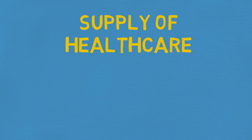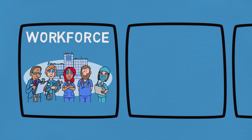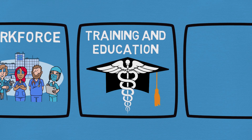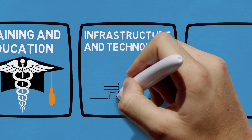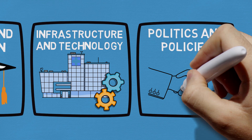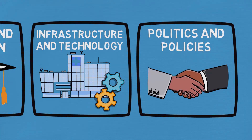On the supply side, the healthcare workforce is critical — having enough doctors, nurses, and specialists is crucial. In low-income countries there often aren't enough healthcare workers, and richer countries recruiting from poorer ones makes this worse. Good training and education systems ensure a steady supply of professionals. Infrastructure and technology also matter: hospital capacity, access to medicines, and advanced medical equipment can all improve care, though they are expensive to maintain, especially in low-income countries. Finally, politics, policy, and economic factors — including public investment and international support from organizations like the World Bank and the Global Fund — can significantly expand healthcare supply.